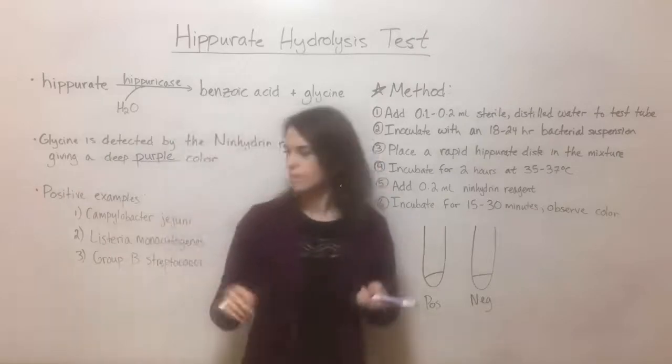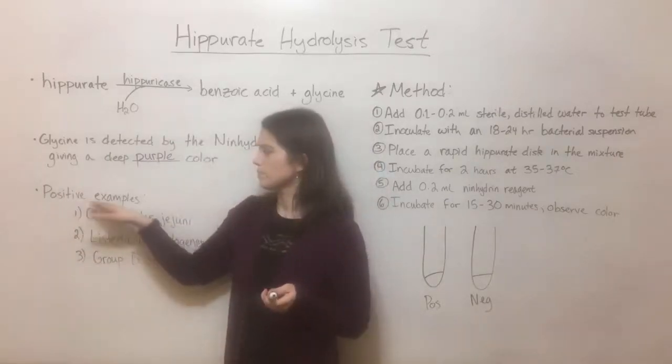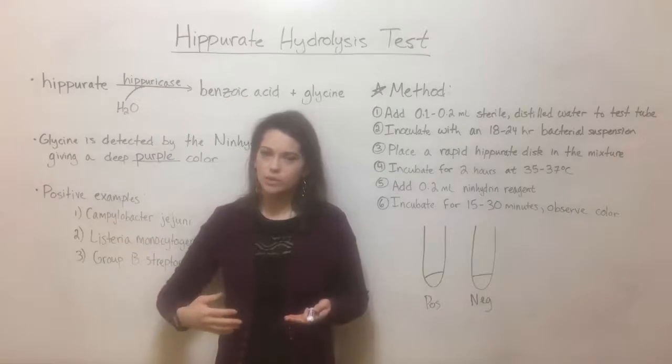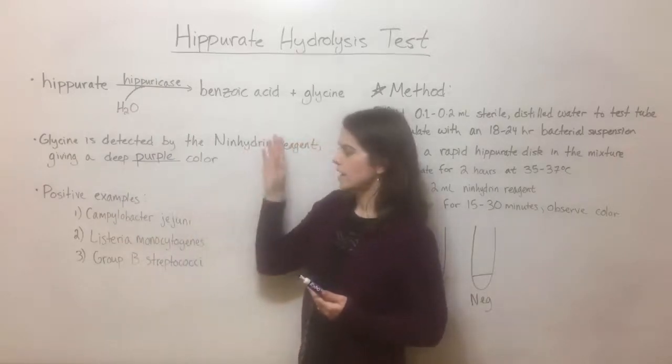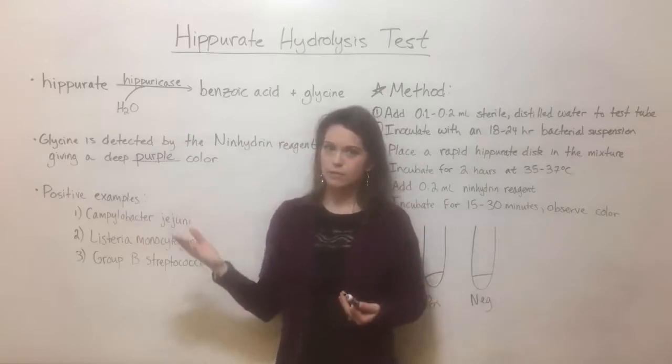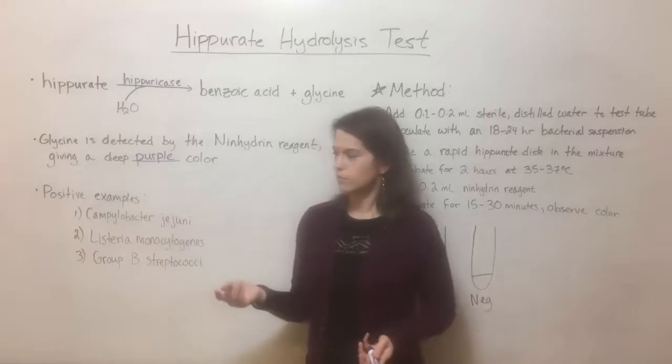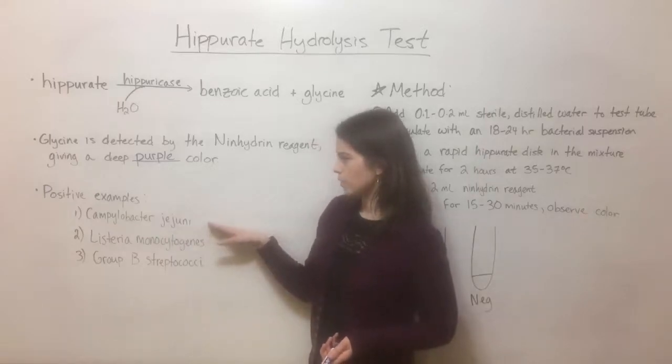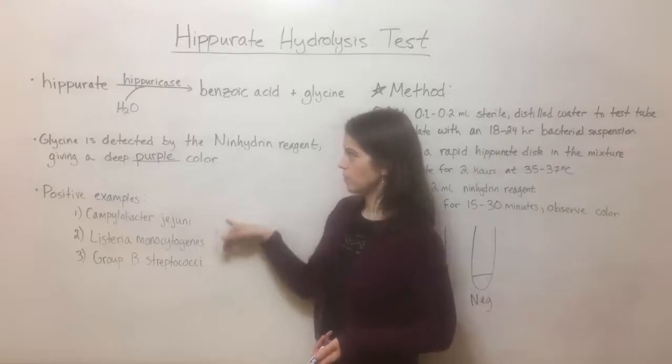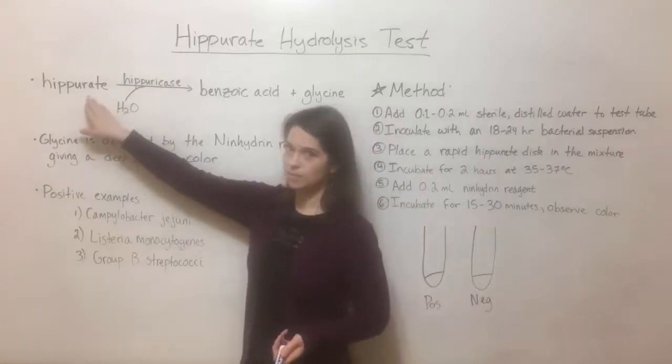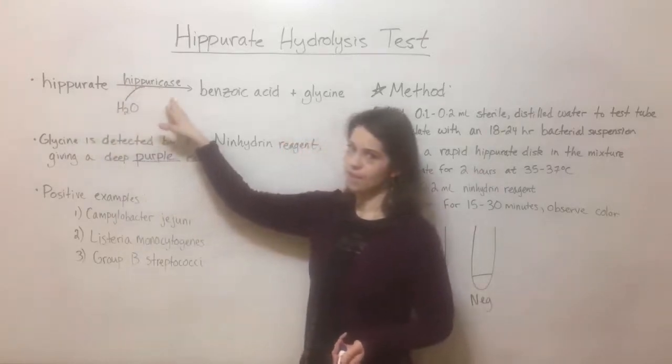Before we go on to talk about the method, let's take a minute to mention some positive examples. These are clinically relevant examples. What I mean by that is these are examples of hippurate hydrolysis positive bacteria that one might see in a patient who's sick in the hospital, for example. And these include Campylobacter jejuni, Listeria monocytogenes, and a few different types of group B streptococci. So all of these would be able to break down this hippurate because they have a hippuricase enzyme.